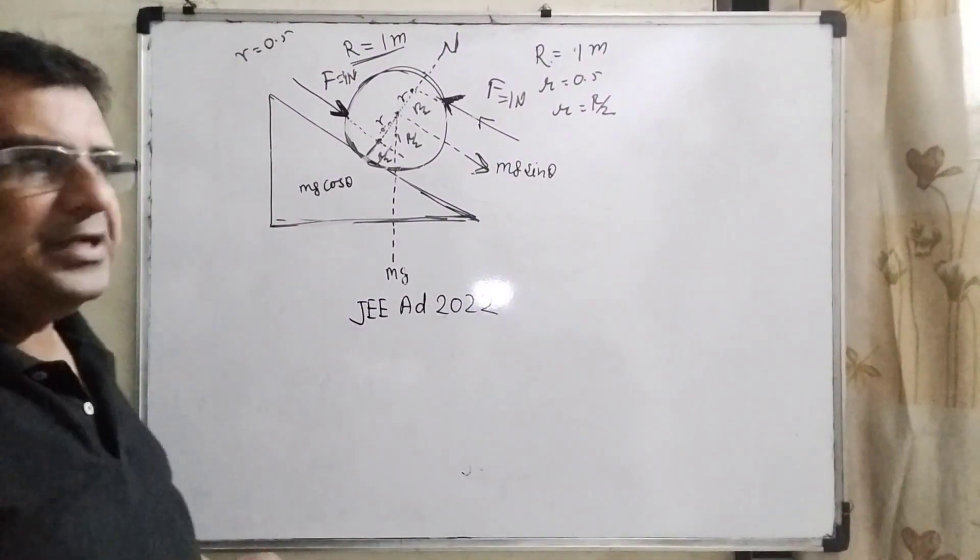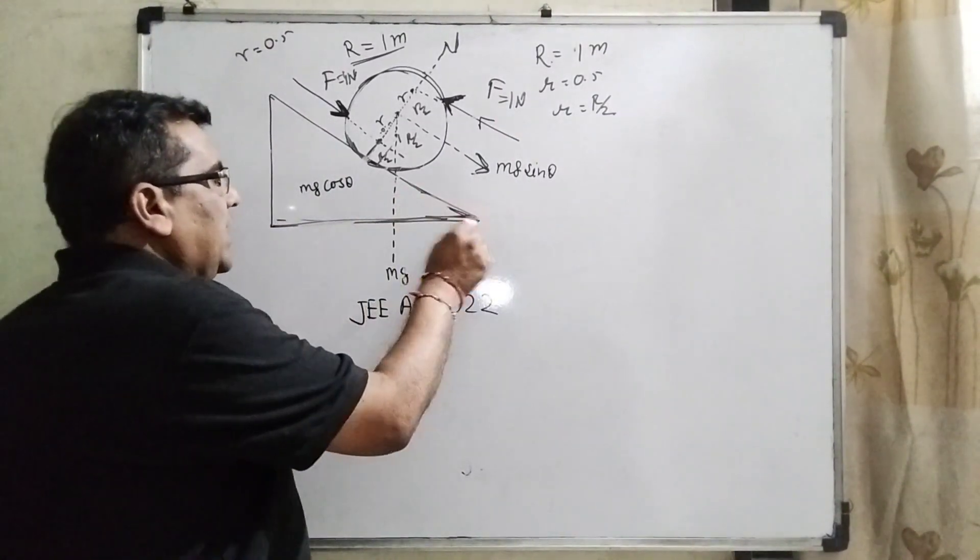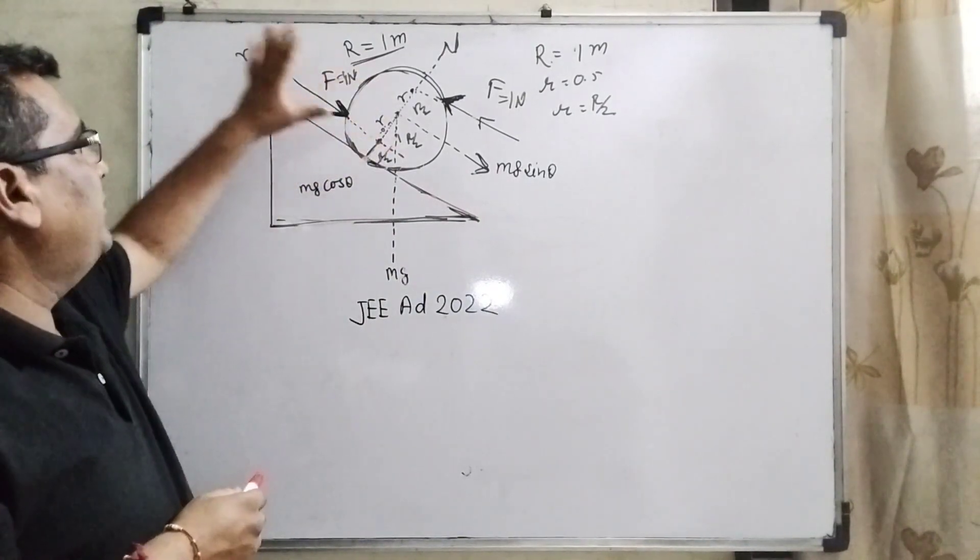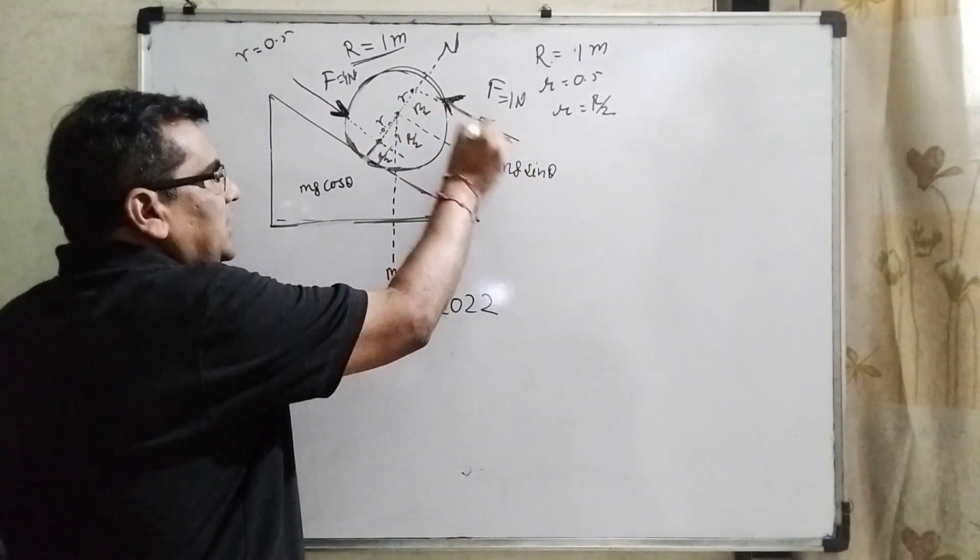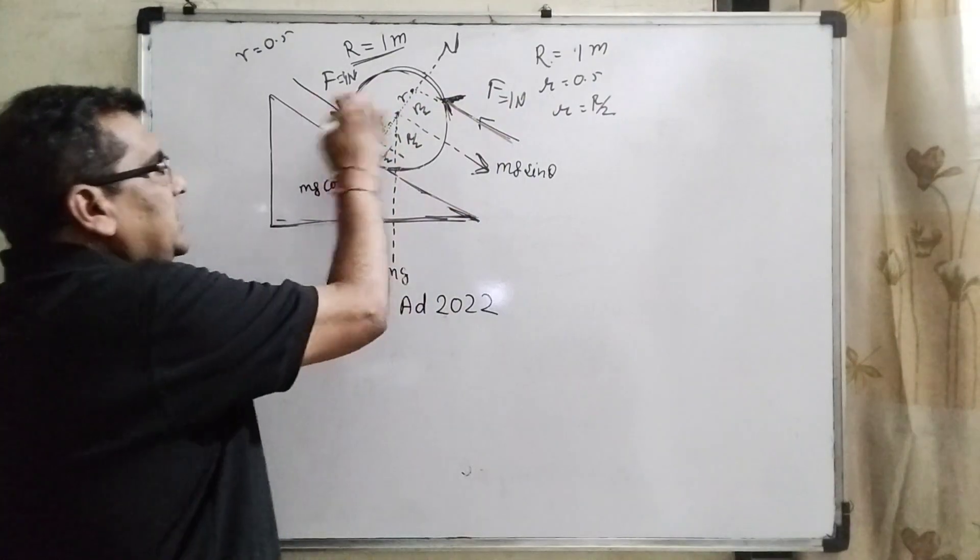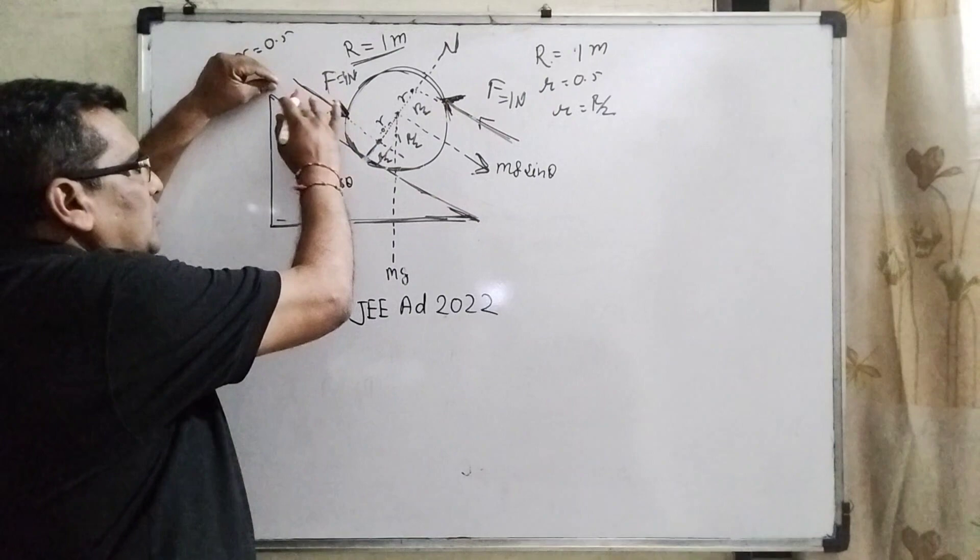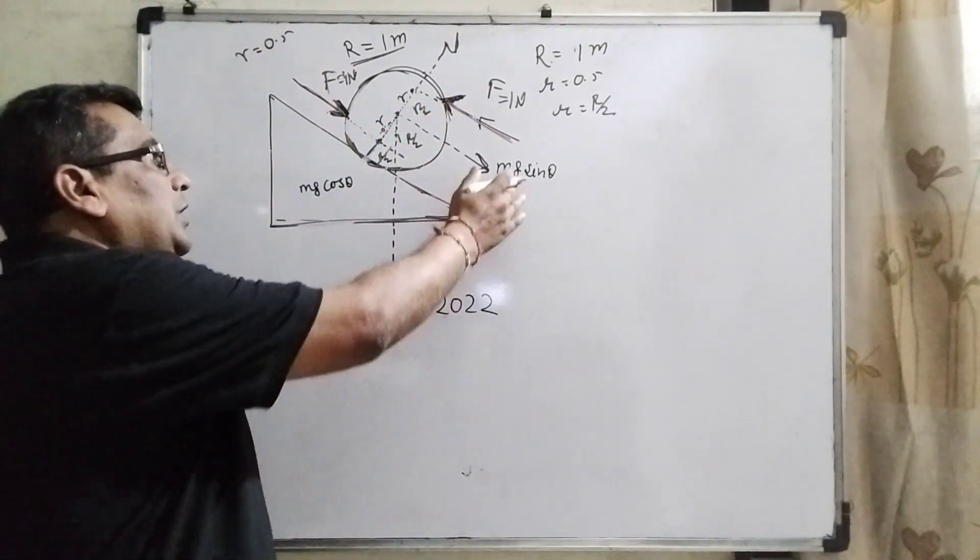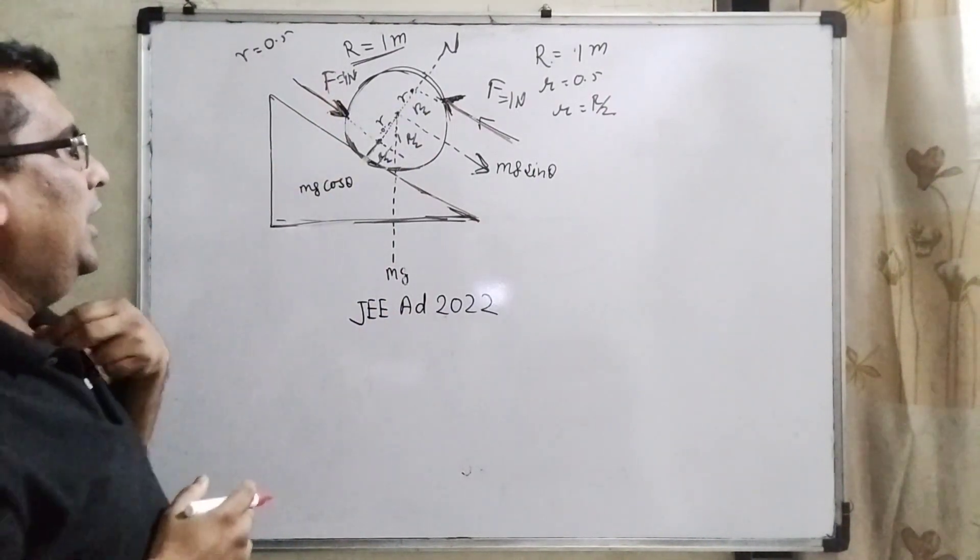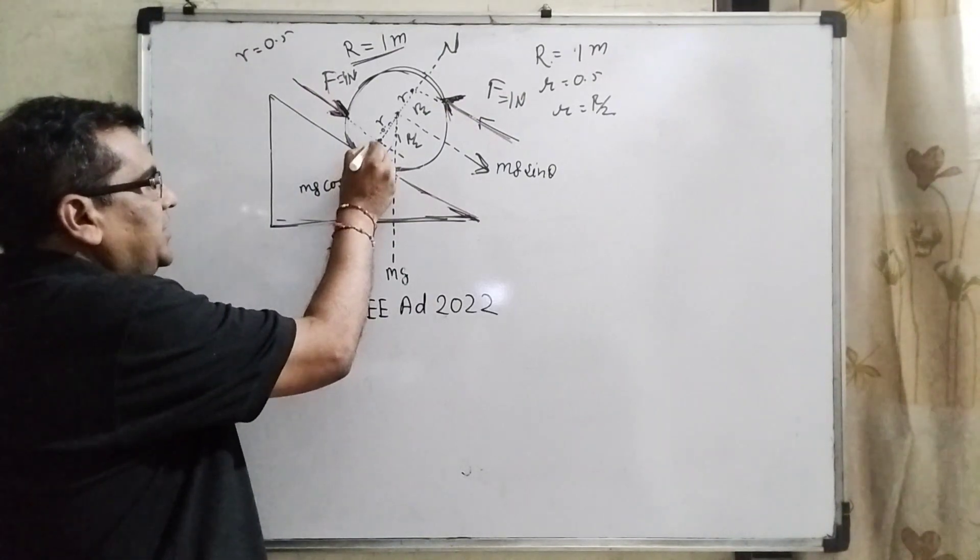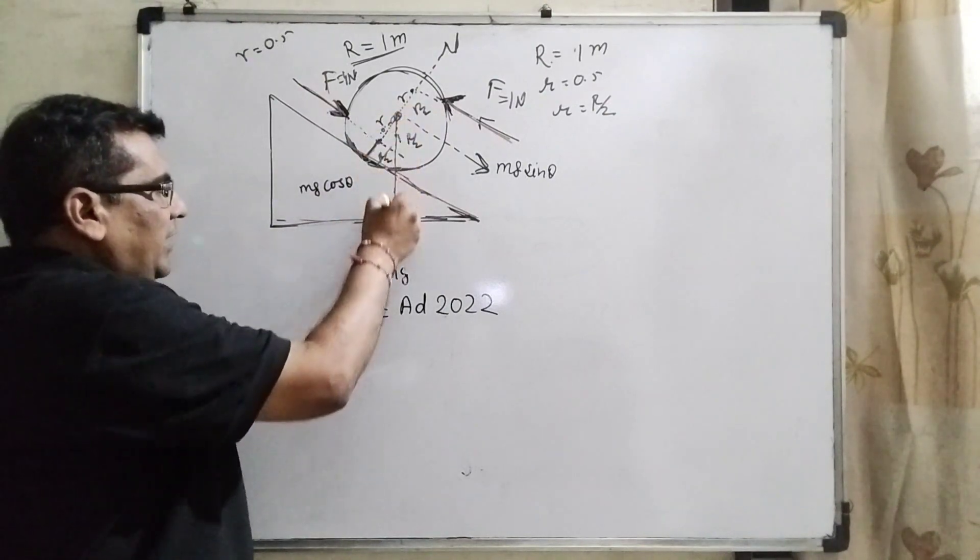This is a very interesting question. Let us first describe this diagram. This is the sphere which has radius capital R equal to 1 meter. And here the two forces you can see—this force is applying in opposite direction. The first force direction is to the right side and this force is acting to the upside. So they are equal and opposite forces applying on it. And here you can see that this is the point of contact of the inclination and this is the center.